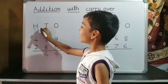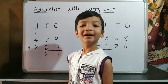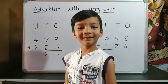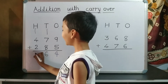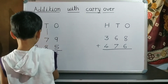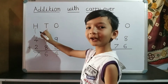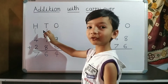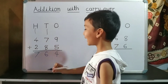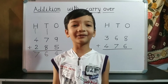Now we do addition of hundred's place. 1 plus 4 is 5. 5 plus 2 is 7. So we write 7 on hundred's place. 7 is on hundred's place, 6 is on ten's place, and 4 is on one's place. So our answer is 764.